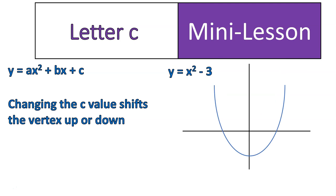Changing the C value shifts the vertex up or down. And the vertex is the point at the very bottom of that graph where it stops going down and starts going up. That's the vertex. And it shifts that vertex up or down.